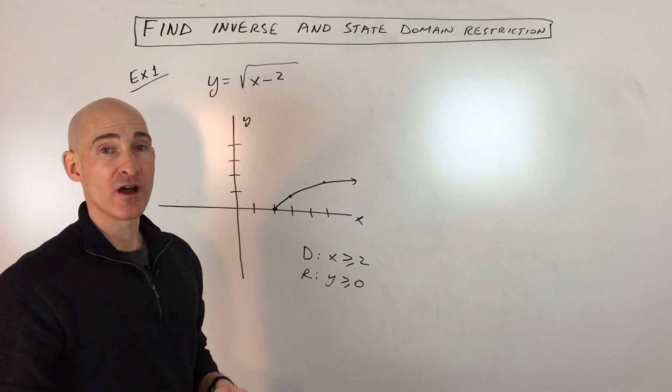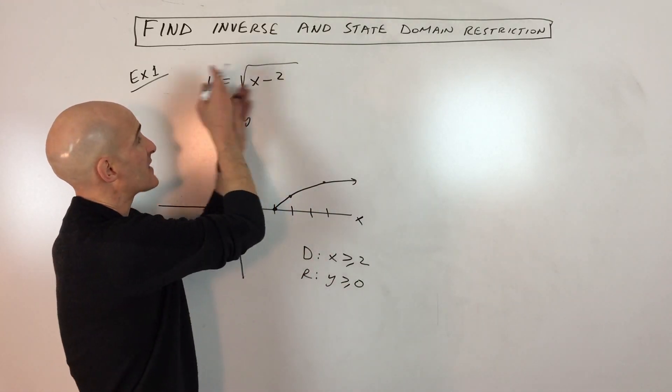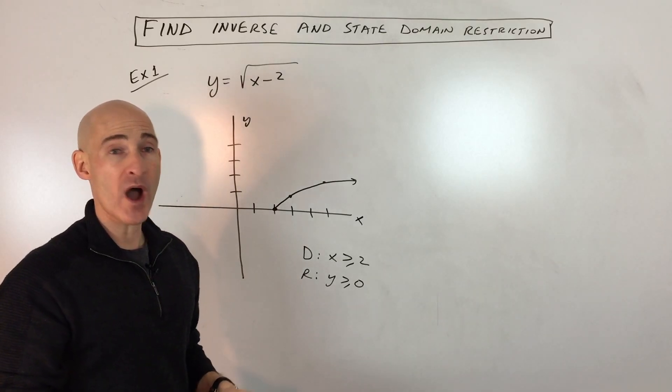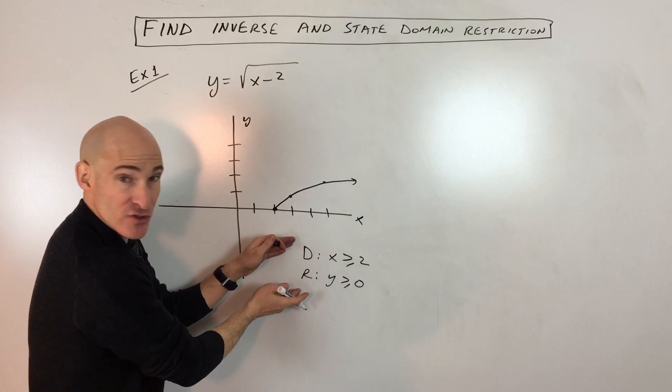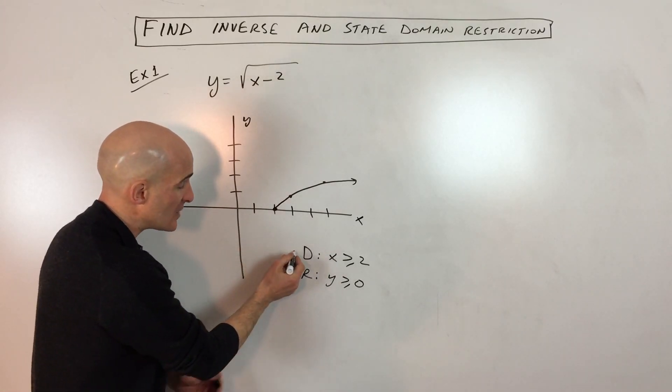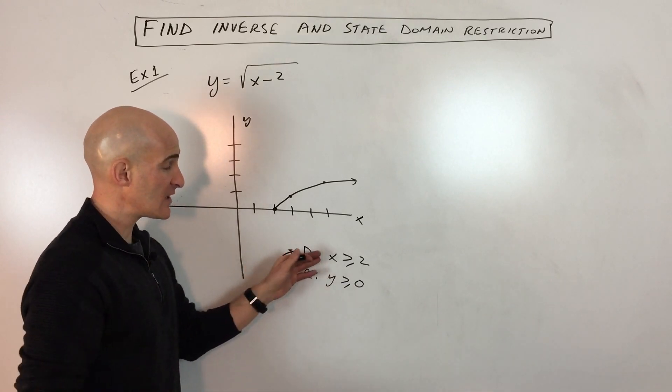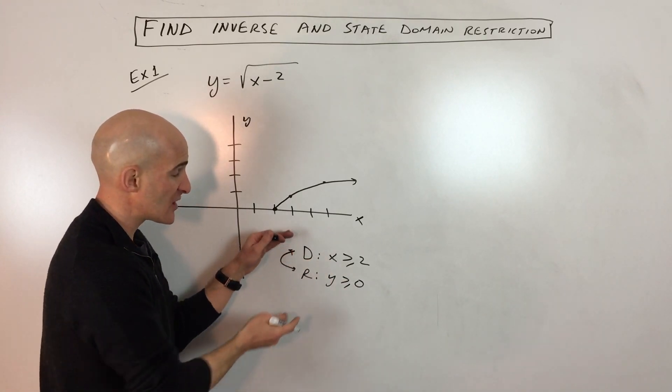Now, when you find the inverse of an equation, you switch the x and the y values and you solve for the new y. But what happens in terms of the domain and the range is that the domain and the range also interchange because the domain is associated with the x, the range is associated with the y.